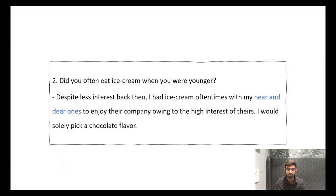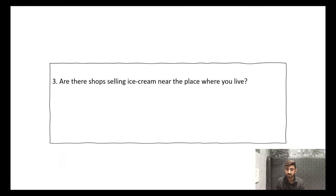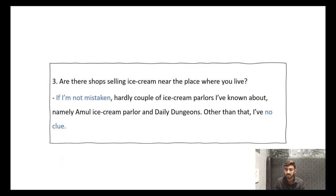After this, the next question: Are there shops selling ice cream near the place where you live? This is a straightforward question. So I will say: If I'm not mistaken, hardly couple of ice cream parlors I've known about, namely Amul ice cream parlors and Daily Dungeons. Other than that, I have no clue. This phrase, if I'm not mistaken, means if I'm not wrong. When any opinion or yes or no question comes, you can use this for variety. I have no clue means I have no idea. Got it?